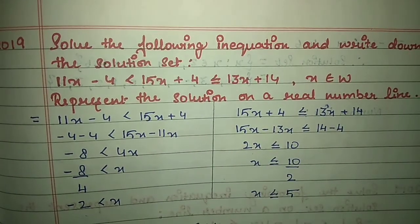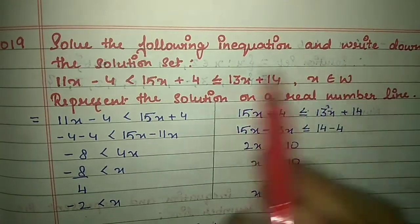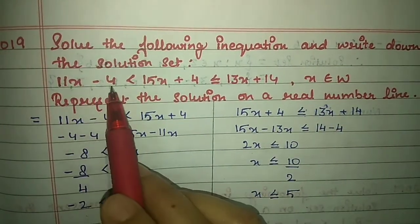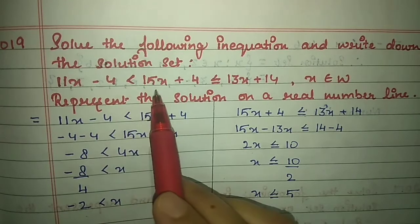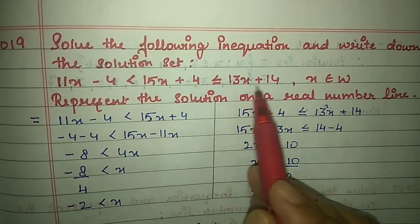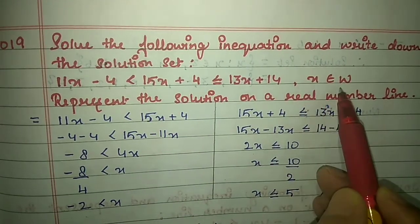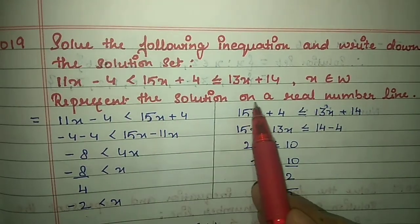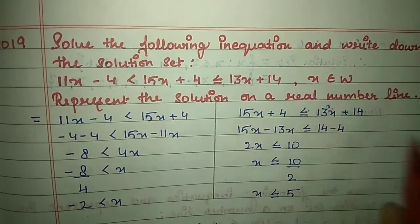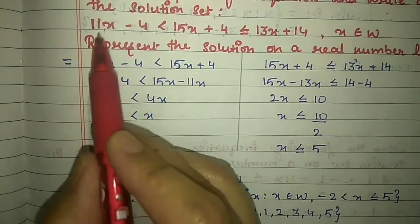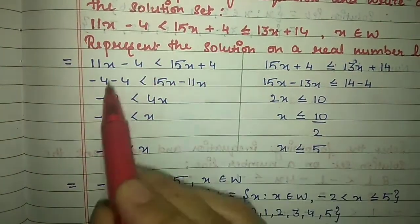Next question from 2019: solve the following inequation and write down the solution set. 11x minus 4 < 15x + 4 ≤ 13x + 14, where x belongs to whole numbers. Represent the solution set on the number line.